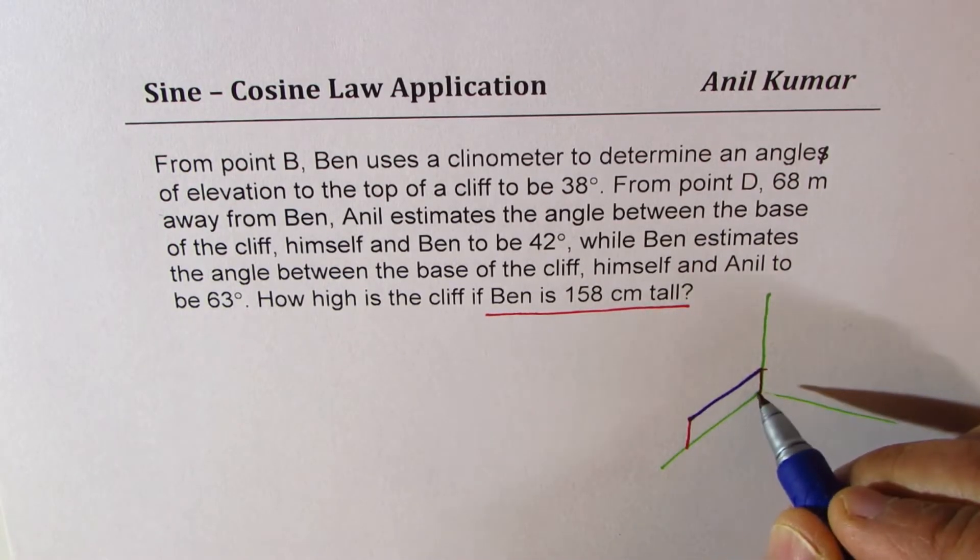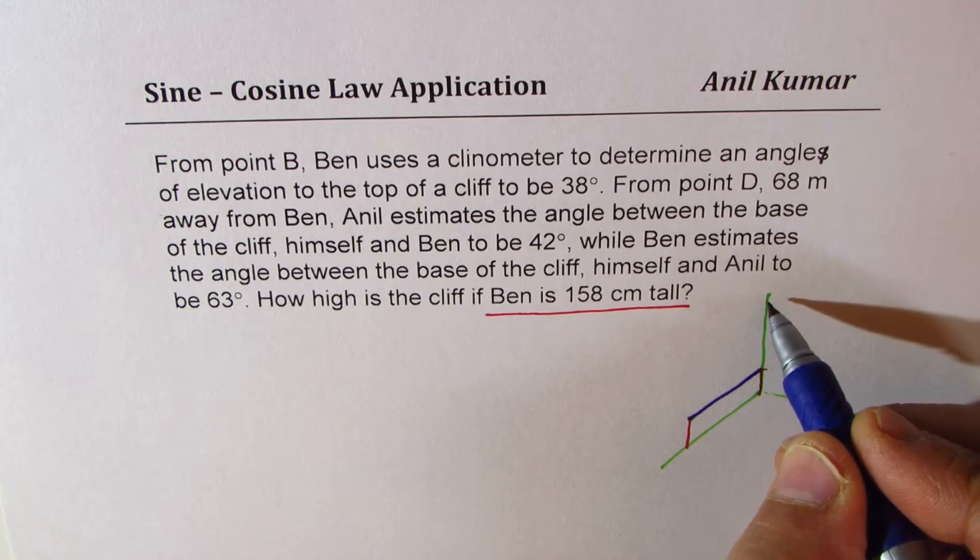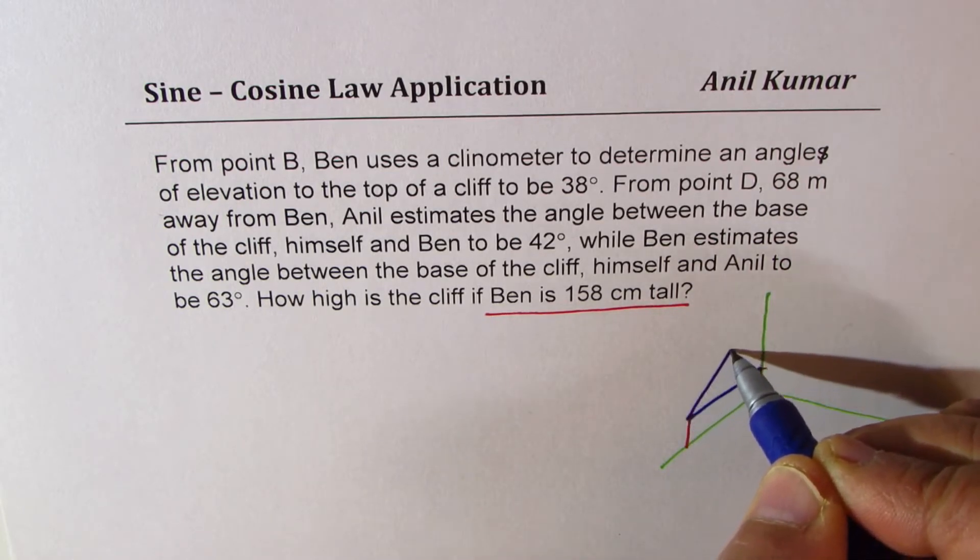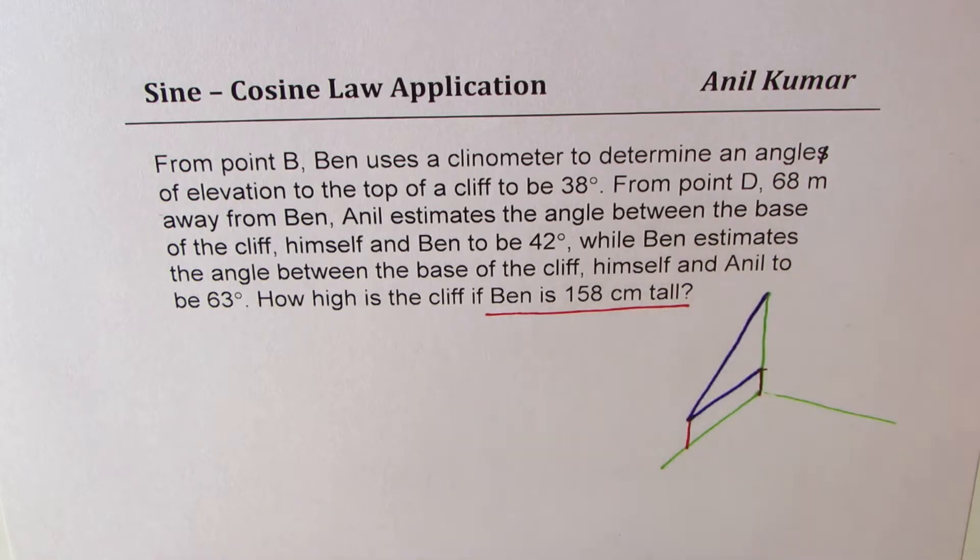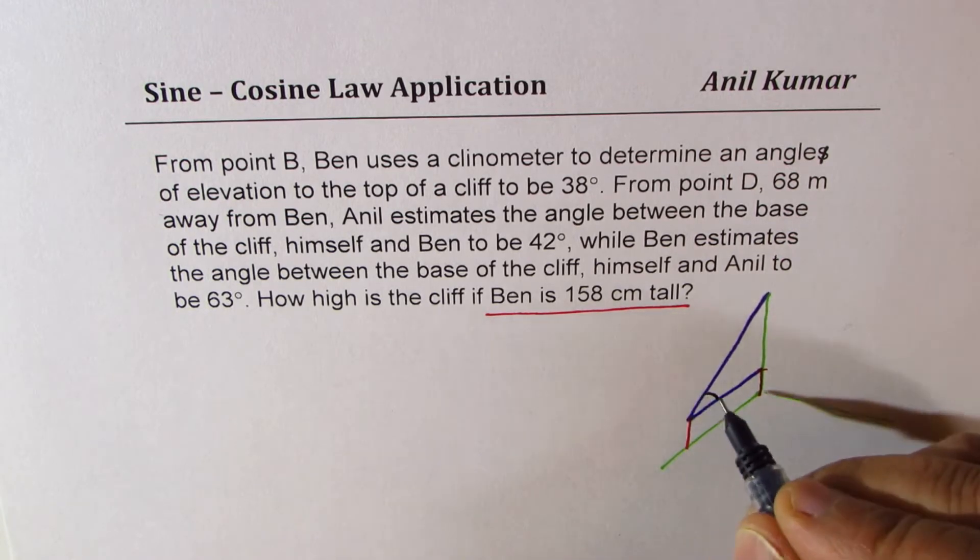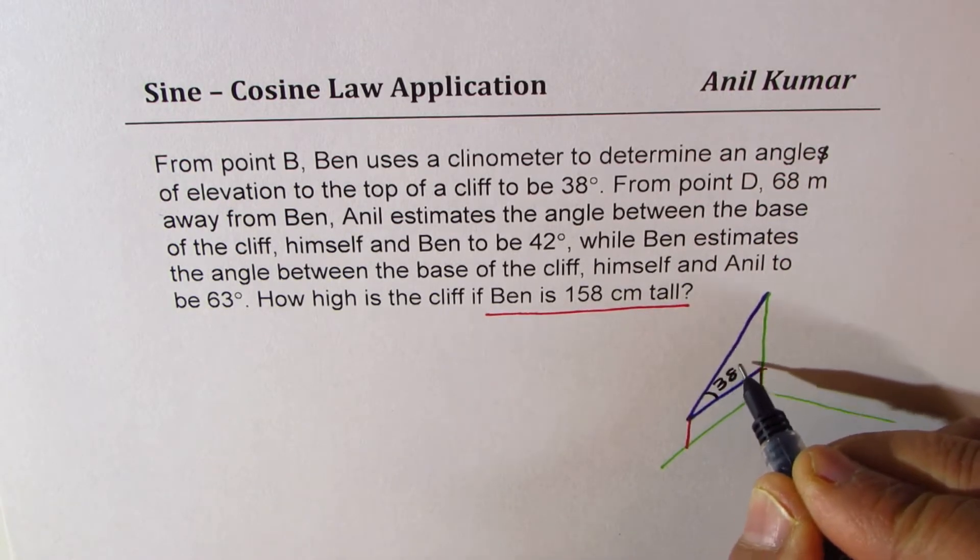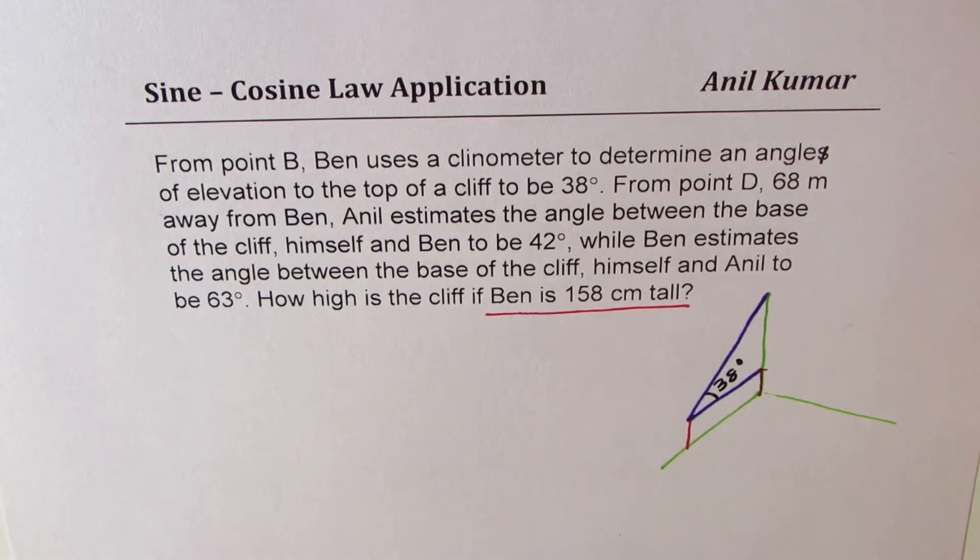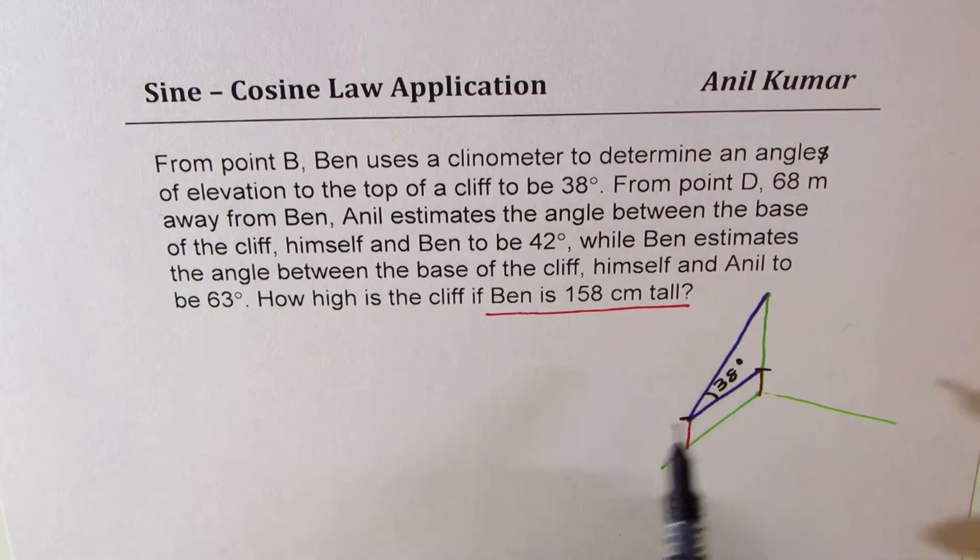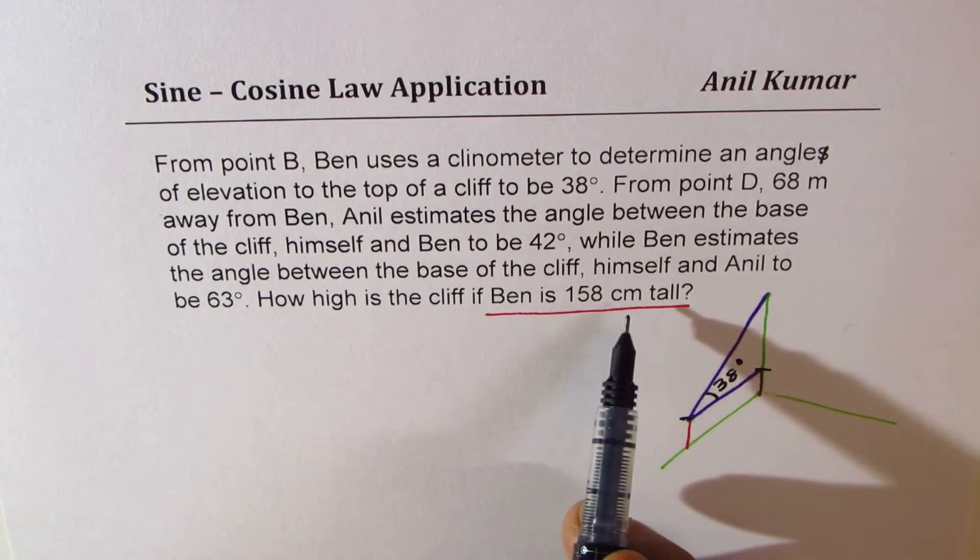So that becomes another plane. Let's say that's the top of the cliff. Then we can join these two points to the top, and angle of elevation is always with the base. So that becomes the angle of elevation, 38 degrees. Well, the drawing is not to scale. So that means this height is the eye level, 158 cm.